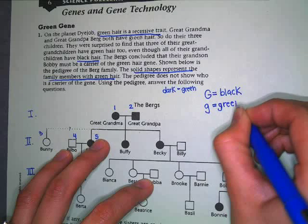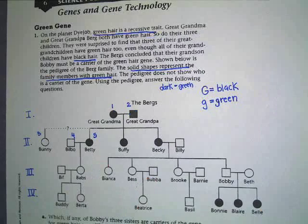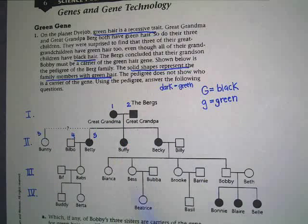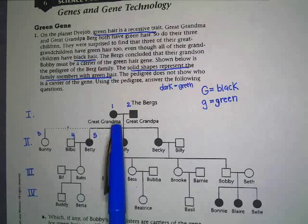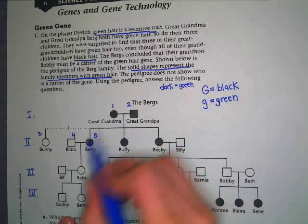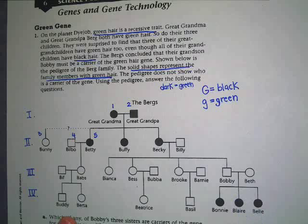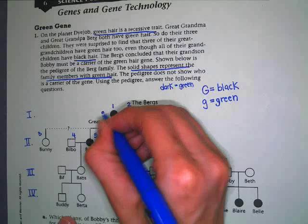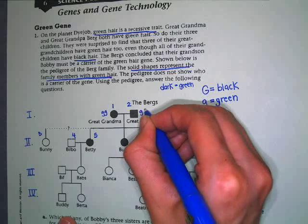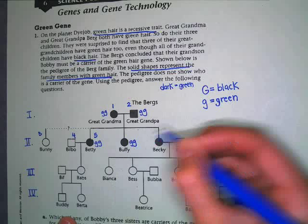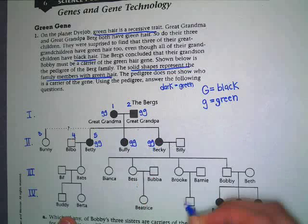Little g is the recessive allele and it's going to be green hair. So if you look at all these people and they all have green hair, what should their genotype be? Little g, little g. The next thing you want to do is write in the genotypes for as many people as you know. All people that have a dark shape are little g, little g.